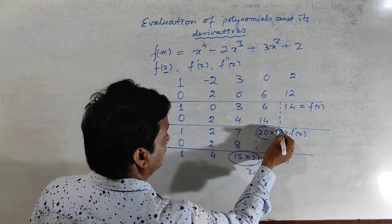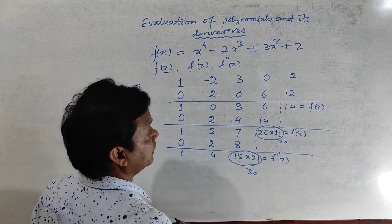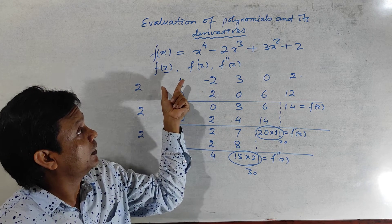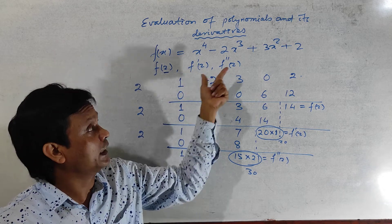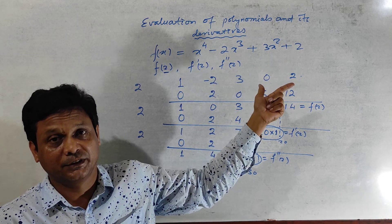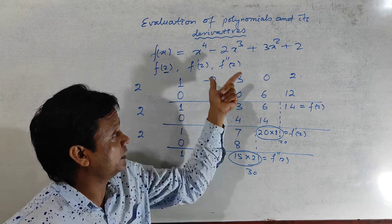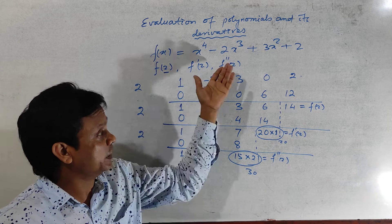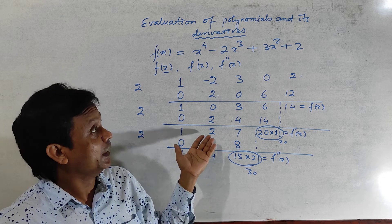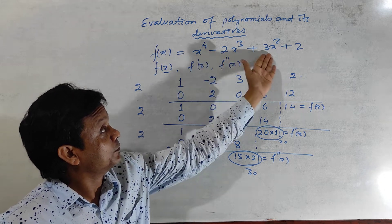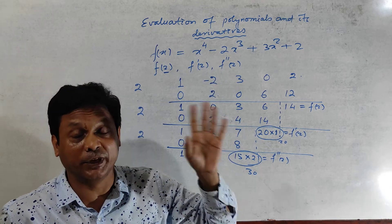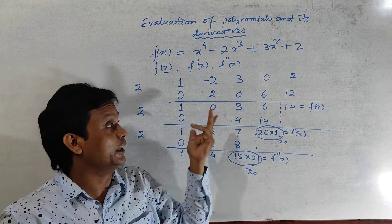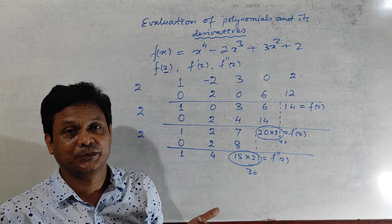So in this way you can find out the value of the polynomial and the derivative, first derivative and the second and third derivative, further and so on. And it is the simplest way, you cannot get any method simpler than this method. And now do yourself any problem, take any polynomial and find the derivative, first, second, third at any point.